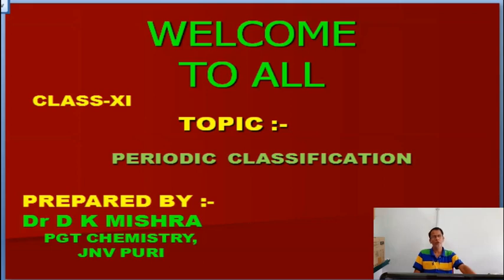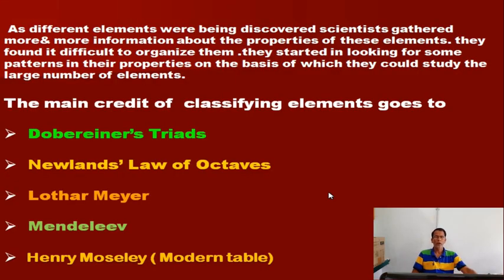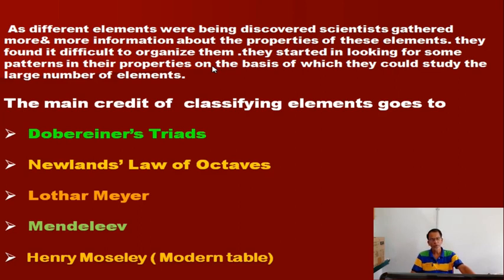Welcome to LFO. Today we are going to discuss the topic of periodic classification. Different elements are being discovered by scientists and they gather different information about the properties of elements. They face different difficulties to organize the elements, to remember the elements and their properties systematically. There is an important challenge for scientists: how to arrange the elements in a systematic manner so that properties can be studied systematically.